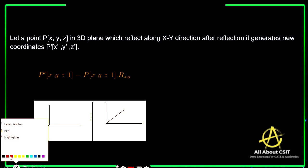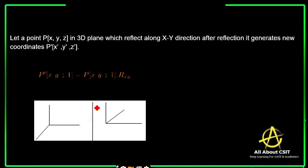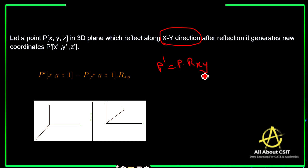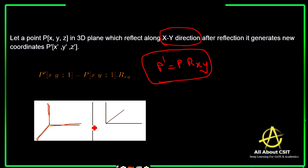If you see this diagram, let the point P(X, Y, Z) in a 3D plane reflect along XY direction. After reflection, it generates new coordinates P'(X', Y', Z'). So P' is equal to P into the reflection matrix along XY axis. Whenever reflection along XY occurs, XY remains the same and the Z, whatever it may be, gets reflected — Z coordinates will become negative.